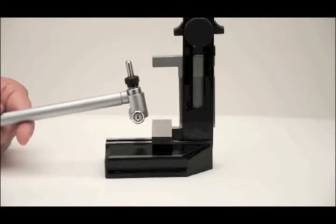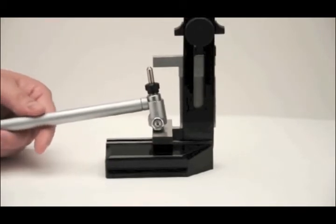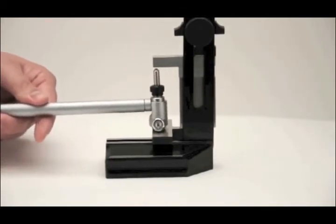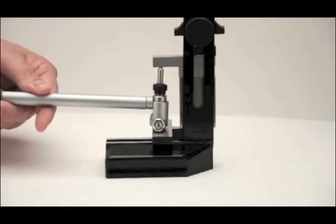Lay the bore gauge centralizers on the base of the setting master. Press down so the anvil of the bore gauge is lower than the top anvil of the master and place it in between the two setting points.